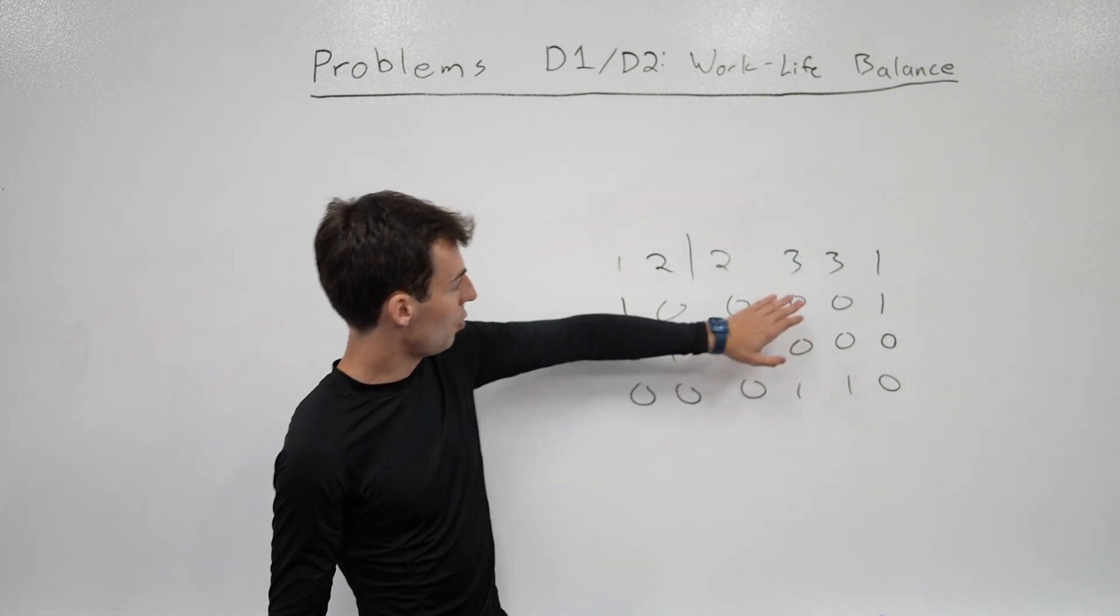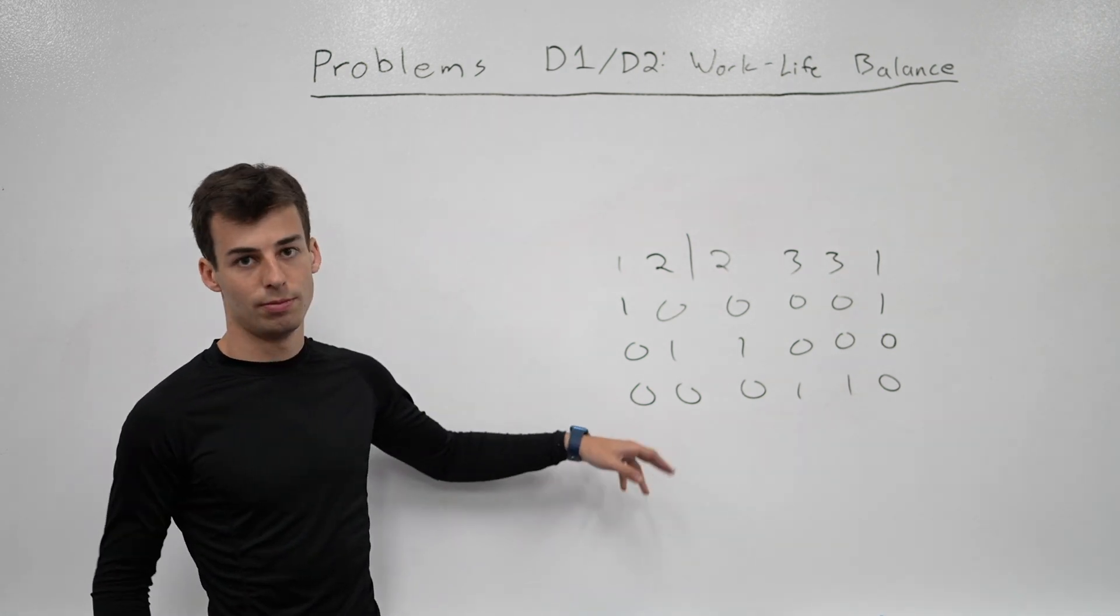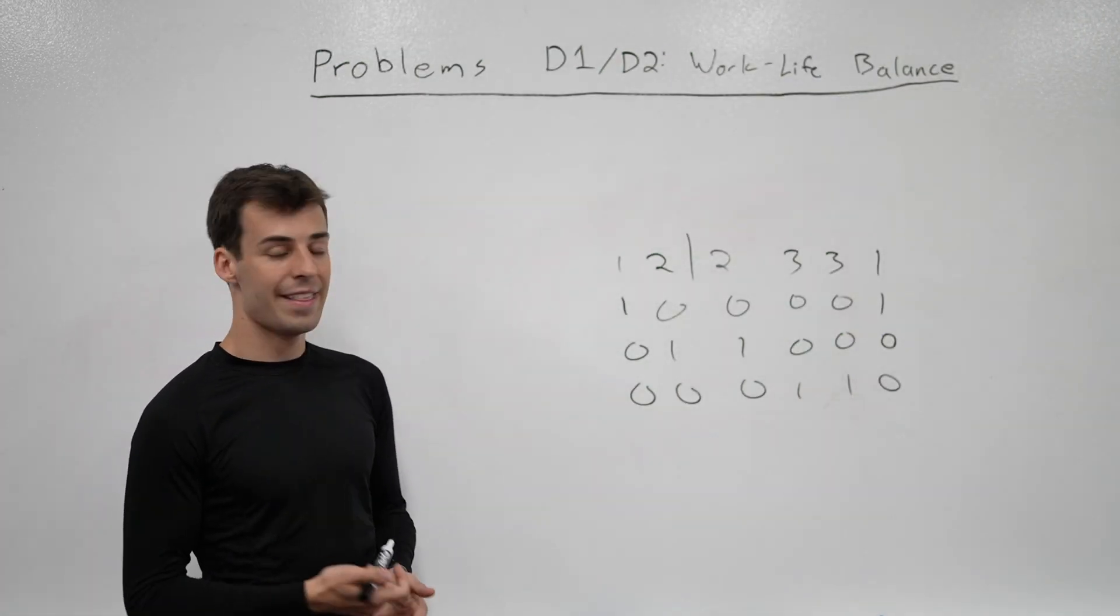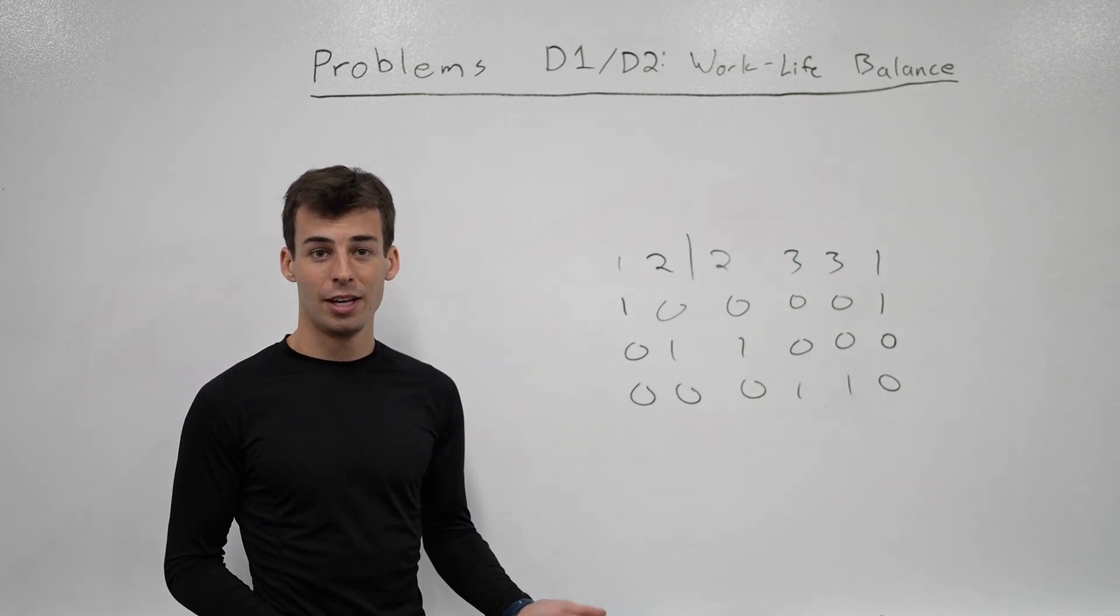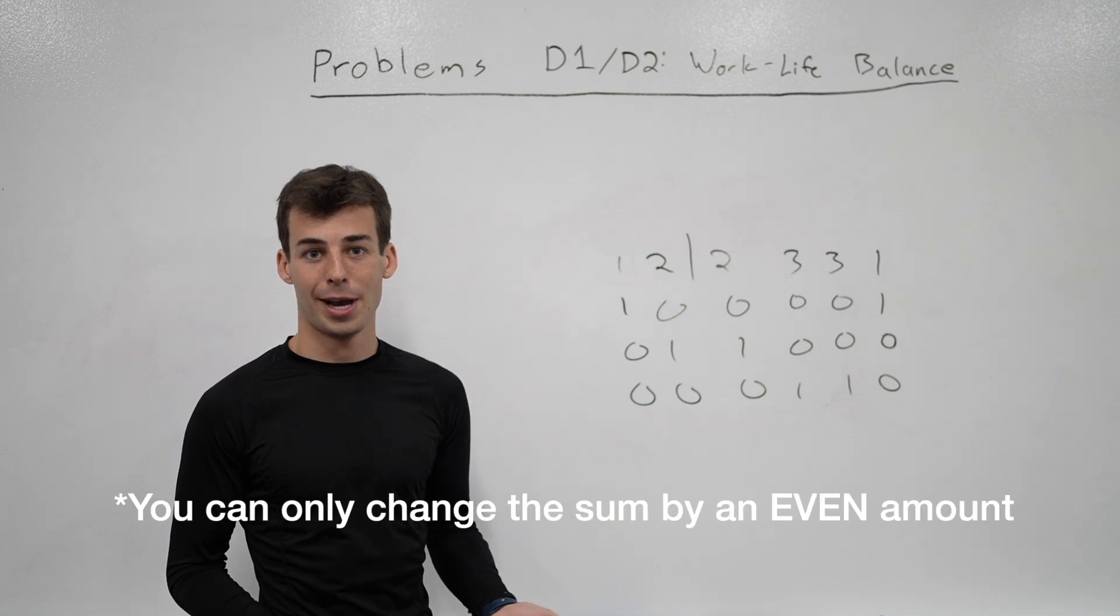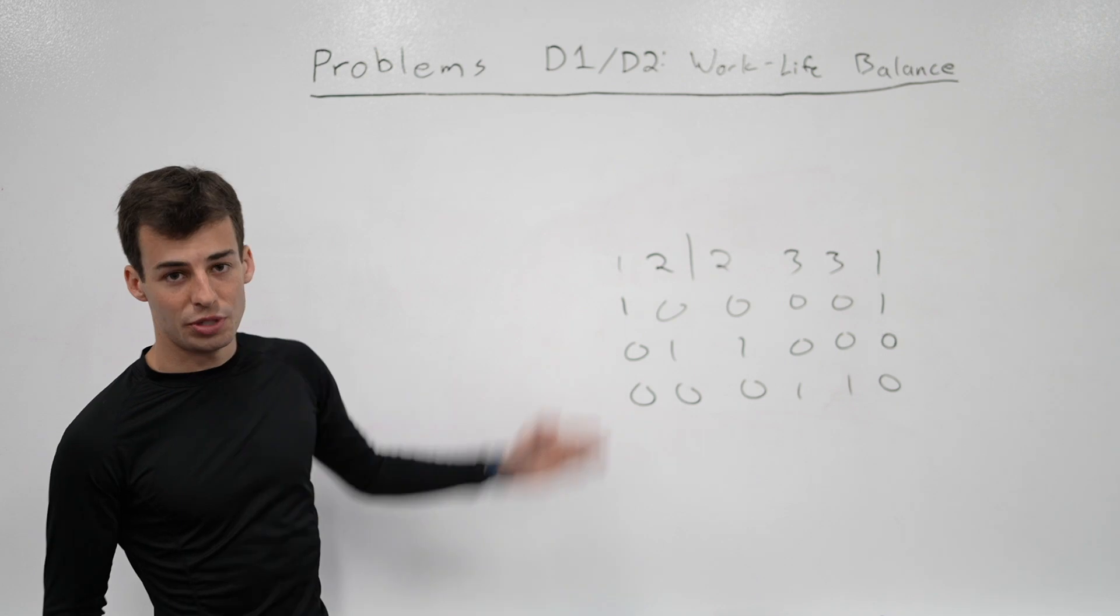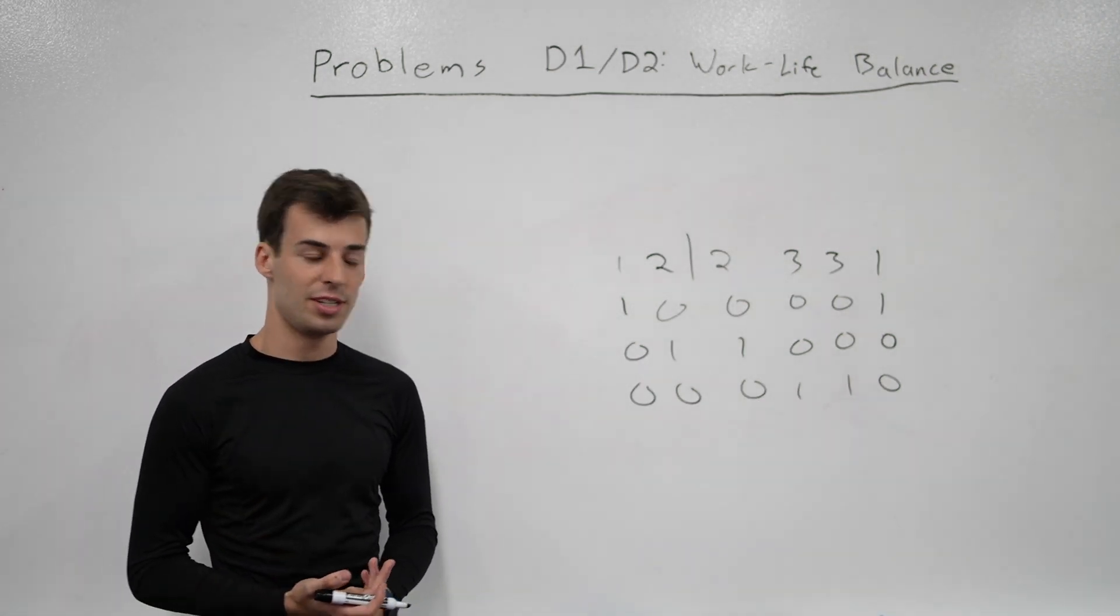Those are the three ways of decreasing the difference. Switching a 2 with a 1 will change the difference by 2, and switching a 3 with a 2 will also change the difference by 2. And then 3s and 1s changes it by 4. The reason is, like, if we do a 2 and a 1, this goes from a 2 to a 1, but this goes from a 1 to a 2. So it's not a change of 1, it's actually a change of 2. That also does a good job of explaining how if the initial sum is odd, you can only change the sum by an odd amount, so it's never going to end up working. That's the idea to D1.